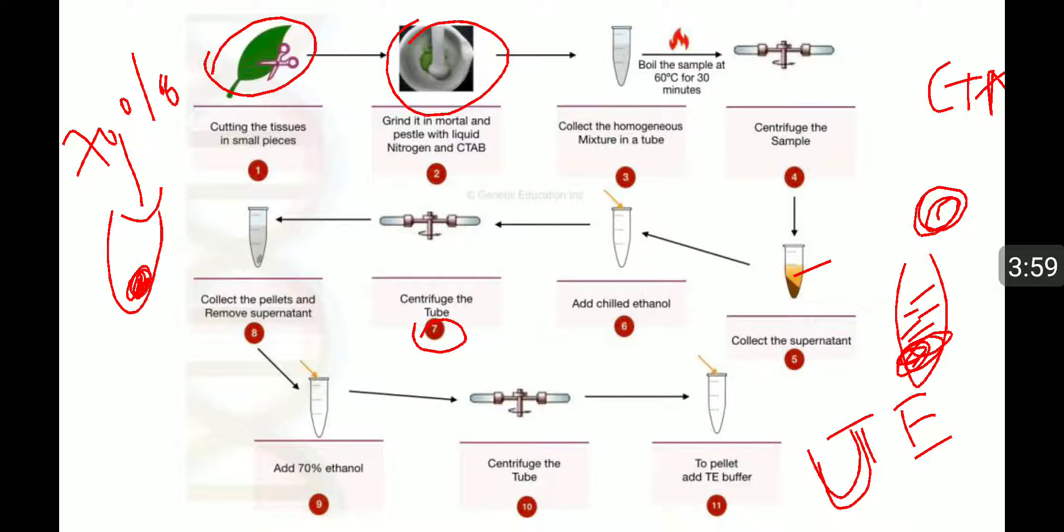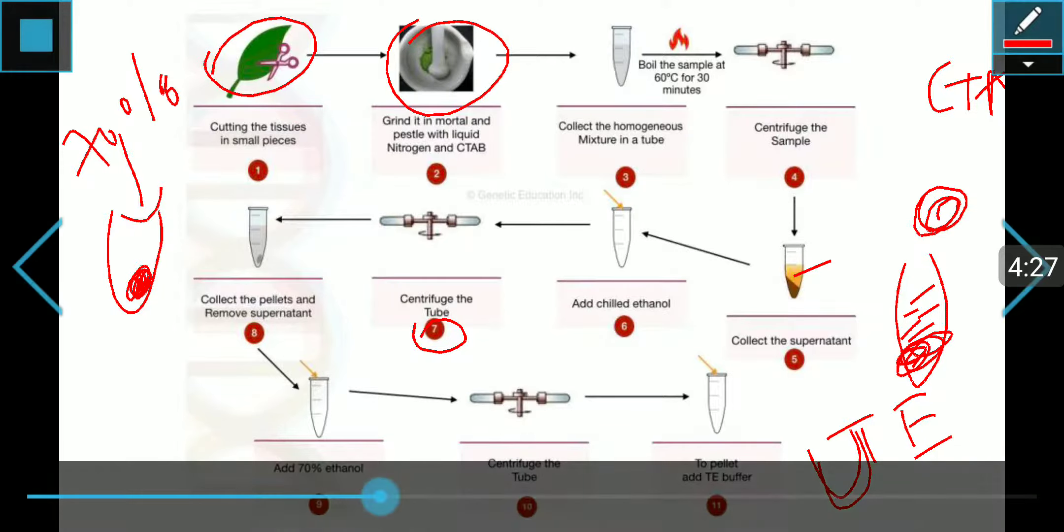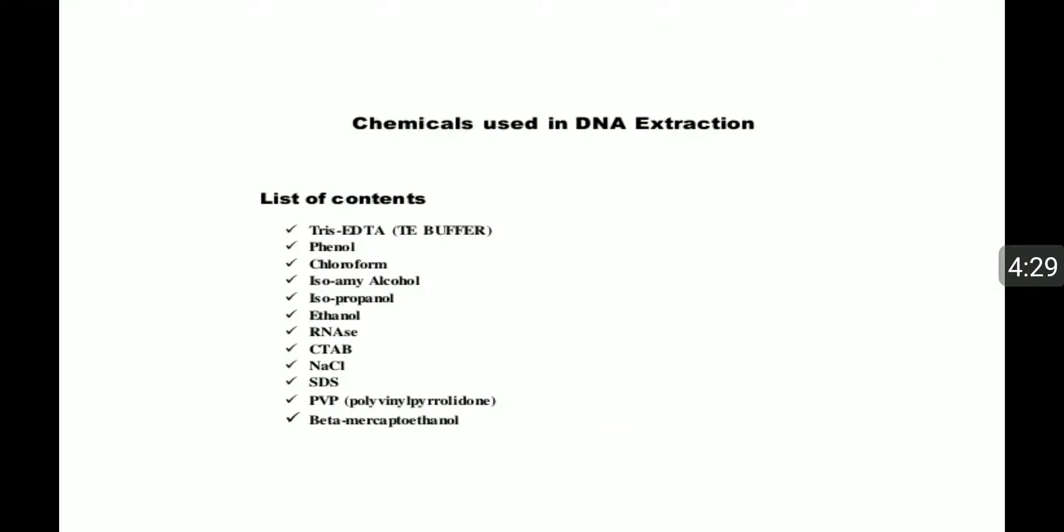As I said, simply first take the leaf sample and crush in the pestle and mortar, keep it for boiling for 30 minutes at 60 degrees Celsius, then centrifuge and collect the supernatant, add chilled ethanol, centrifuge, collect the pellet, add 70% ethanol, centrifuge again, and add TE buffer to that pellet.